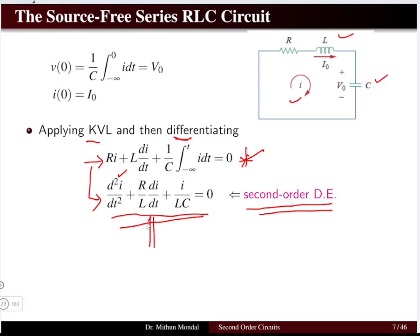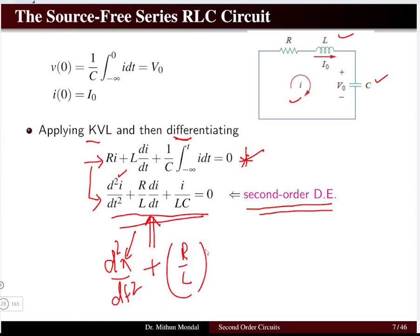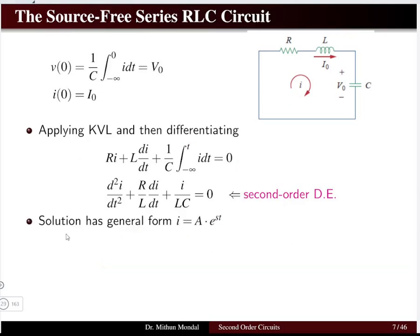The standard form of the second order differential equation is: d²x/dt² + (R/L)·dx/dt + (1/LC)·x = 0, where x can be current or voltage. The right-hand side is zero because this is a source-free (natural) response. The general form of the solution is I = Ae^(st).